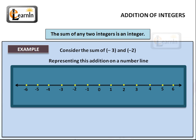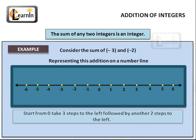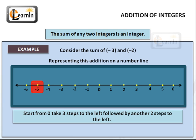Now let's look at an example where both of the integers are negative. Consider the sum of minus 3 and minus 2. Representing this addition on a number line, we start from 0, take 3 steps to the left for minus 3, and then follow it with 2 steps to the left for minus 2. We end up on minus 5. So (−3) + (−2) = −5.